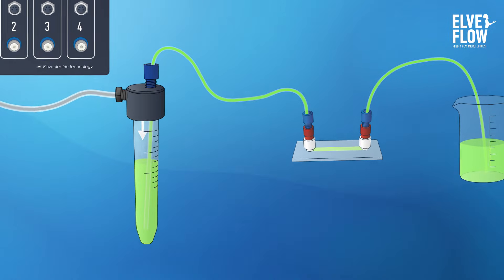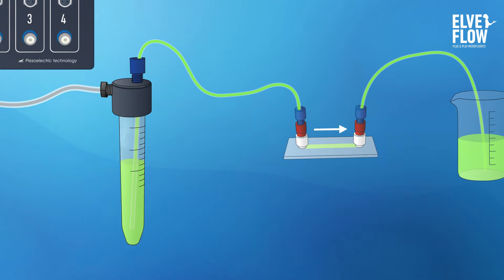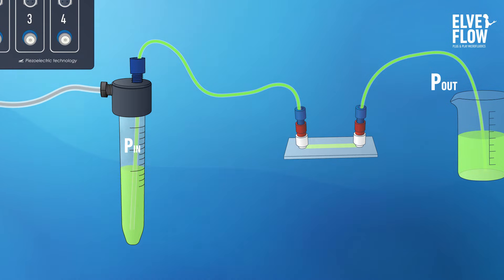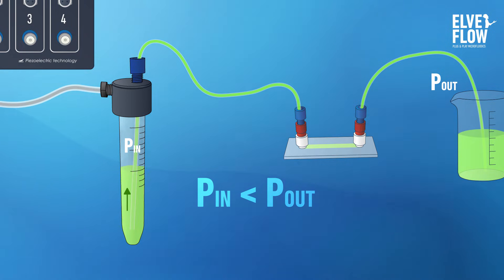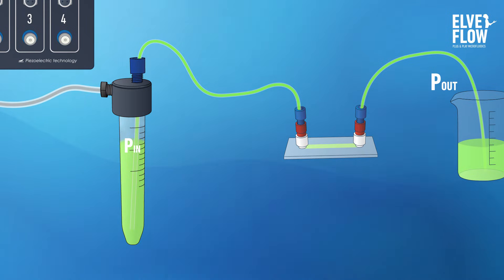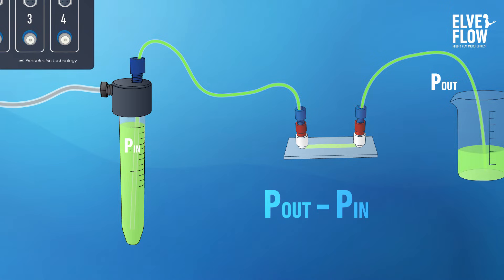Two pressures drive this phenomenon: the outer pressure, P-out, and the pressure inside the reservoir, P-in. When P-in is superior to P-out, the liquid leaves the reservoir. Oppositely, when P-in is inferior to P-out — when using vacuum, for instance — the liquid gets sucked back in. To sum it up, the liquid flows according to the difference of pressure between the inlet and outlet, which is called delta P.